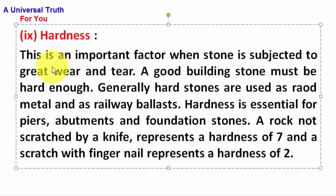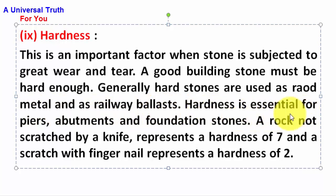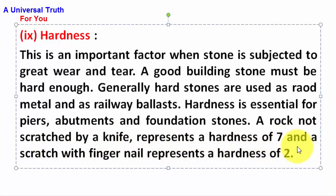Hardness. This is an important factor when stone is subjected to great wear and tear. A good building stone must be hard enough. Generally, hard stones are used as road metal and as railway ballast. Hardness is essential for piers, abutments and foundation stones. A rock not scratched by a knife represents a hardness of seven, and a scratch with a fingernail represents a hardness of two.